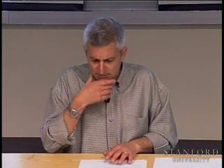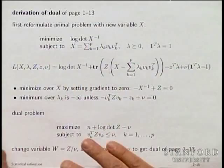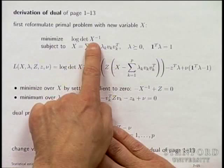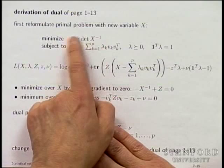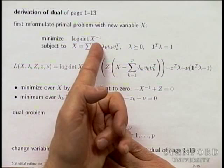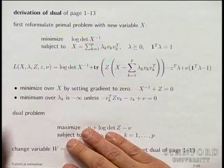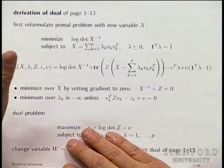I'll skip the derivation of the dual other than mentioning a few things. When you have a matrix constraint, you introduce a Lagrange multiplier. Normally it would be nu^T times (Ax - b). Here it's a matrix equality, so the inner product for matrices is trace(X^T Y), or trace(XY) for symmetric matrices. The interesting computational step is calculating the gradient of log det of the inverse of a matrix — that's covered in an appendix in the book.